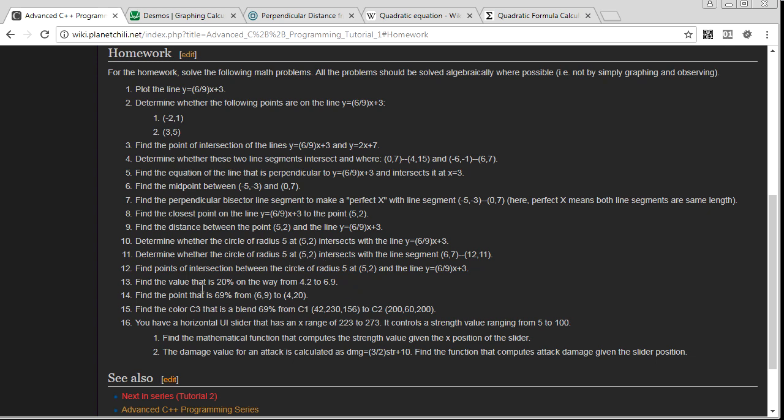So next question: find the value that is 20% on the way from 4.2 to 6.9. Now this kind of question, this kind of problem, is called linear interpolation.